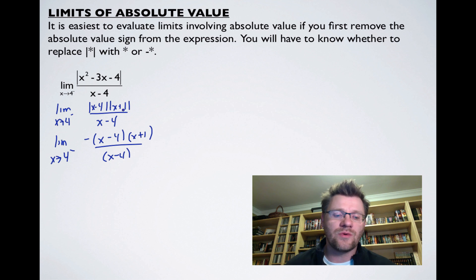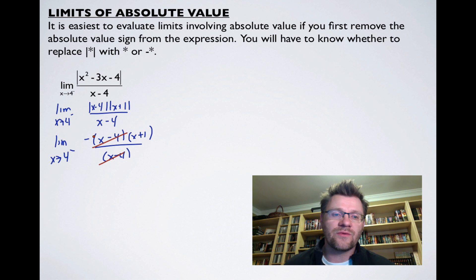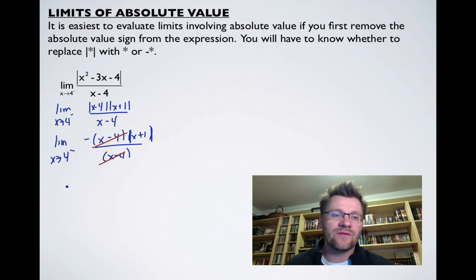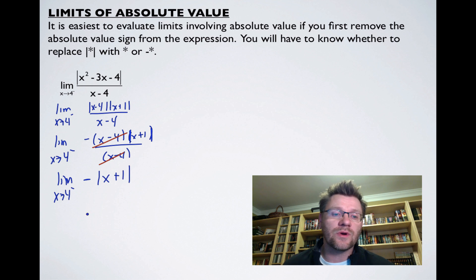This becomes negative (x minus 4) over (x minus 4), times (x plus 1). When we cancel x minus 4, we get the limit as x approaches 4 from the negative side of negative absolute value of (x plus 1). Substituting 4 gives negative (4 plus 1), which is negative 5.